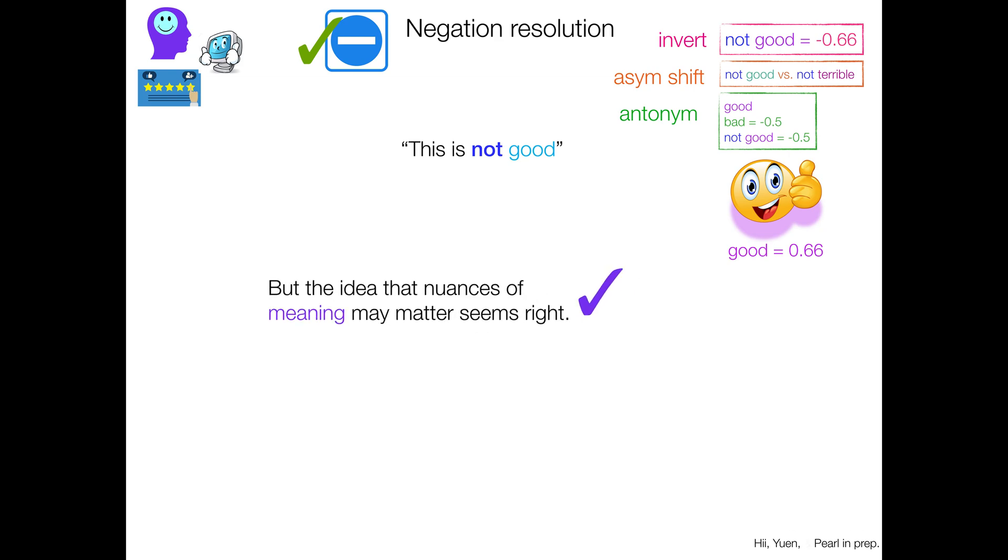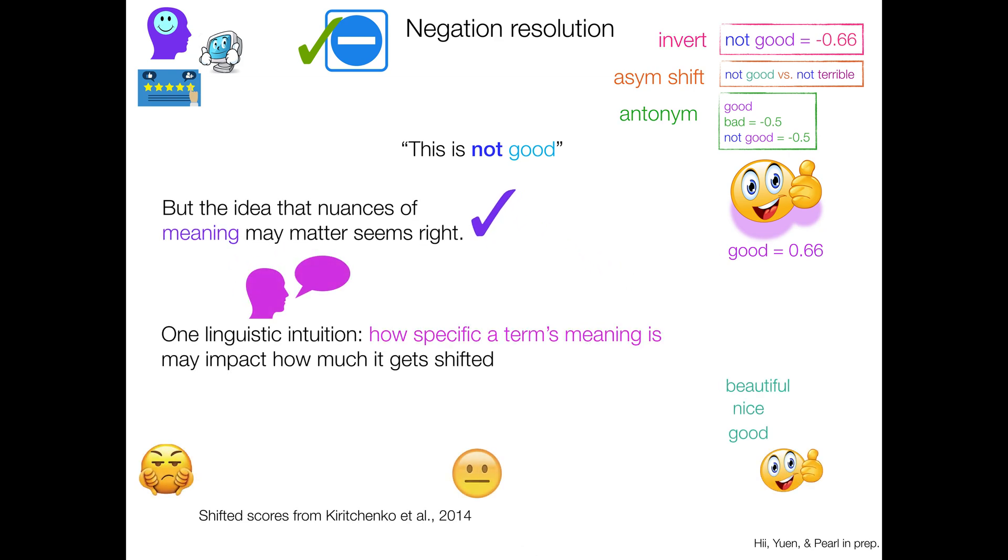So one linguistic intuition that we had was that how specific a term's meaning is may impact how much it actually gets shifted. So if we consider these terms, good, nice, and beautiful, they actually are all pretty darn positive. And in fact, if we think about how specific they are, beautiful feels more specific than good, sort of like, and nice is maybe in between them. And in fact, when you negate them,